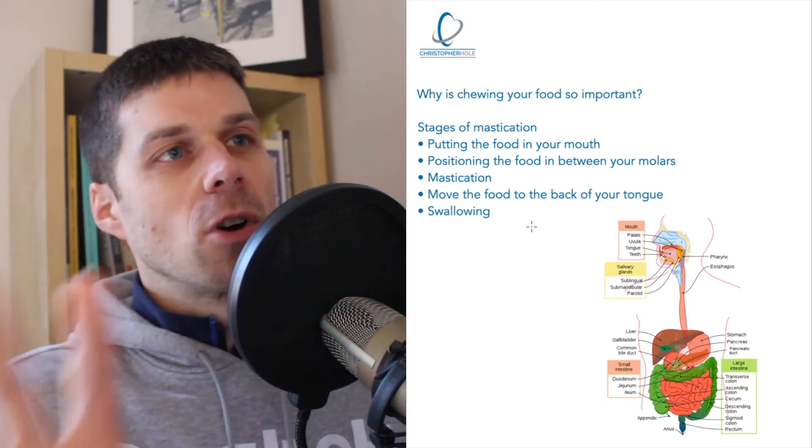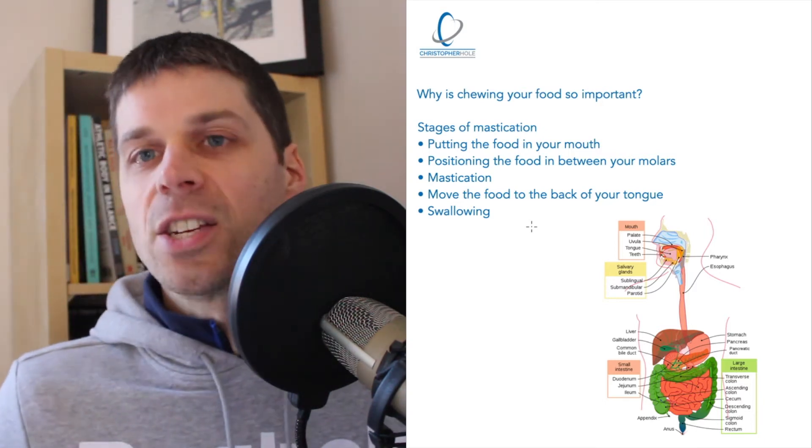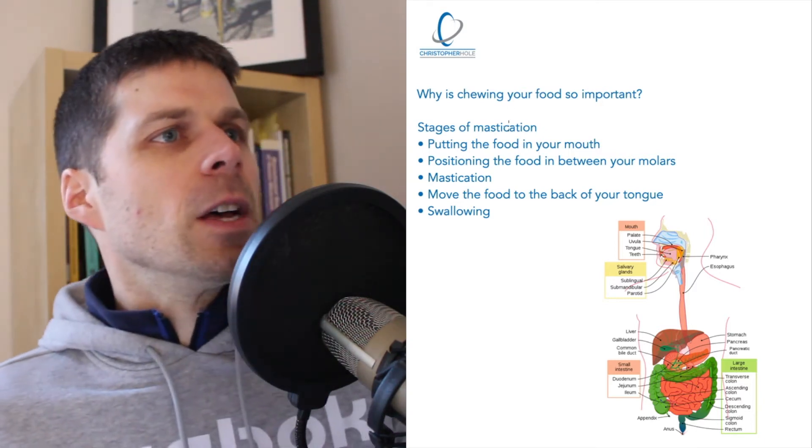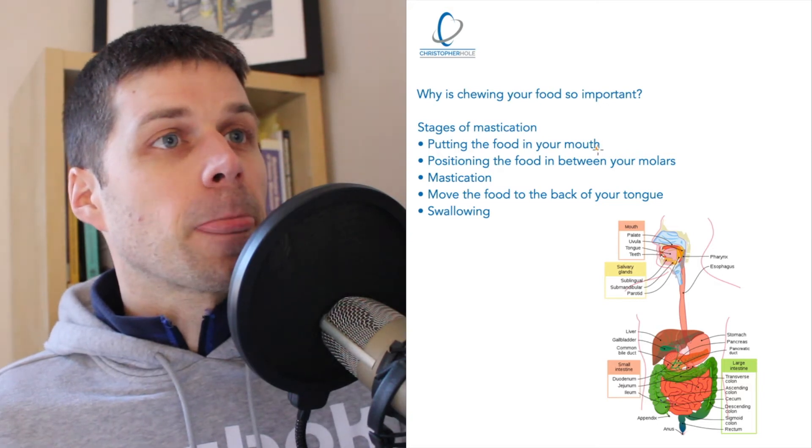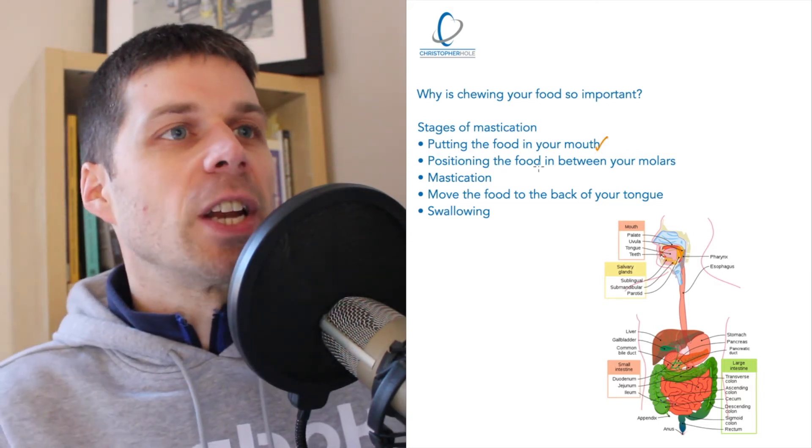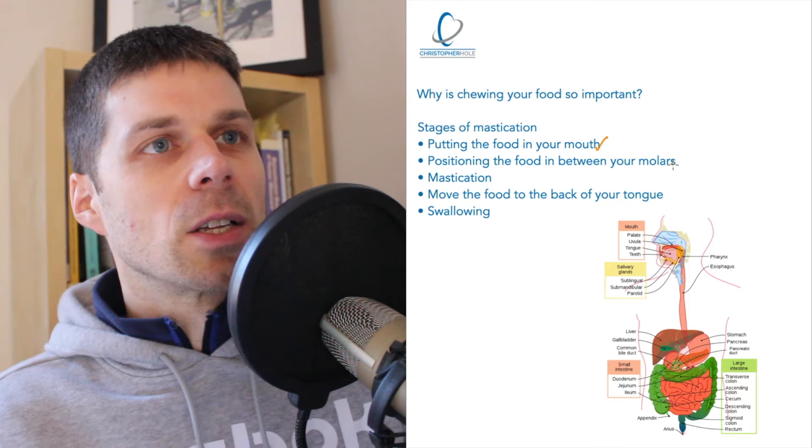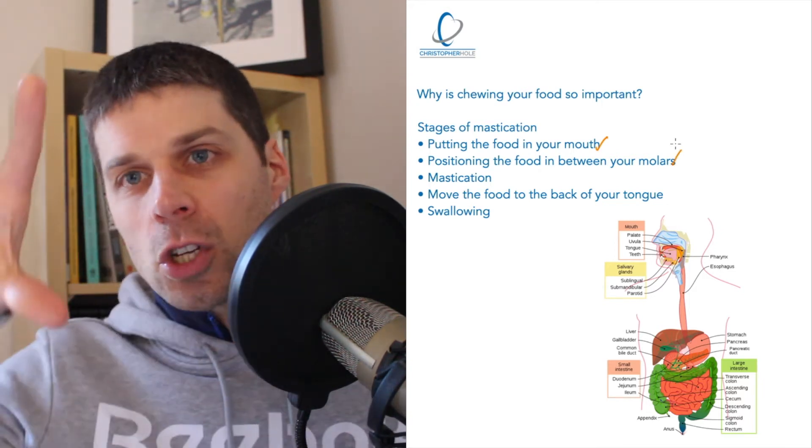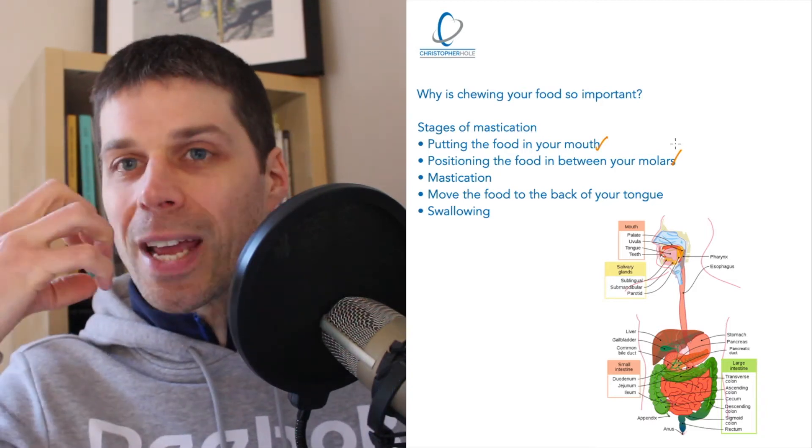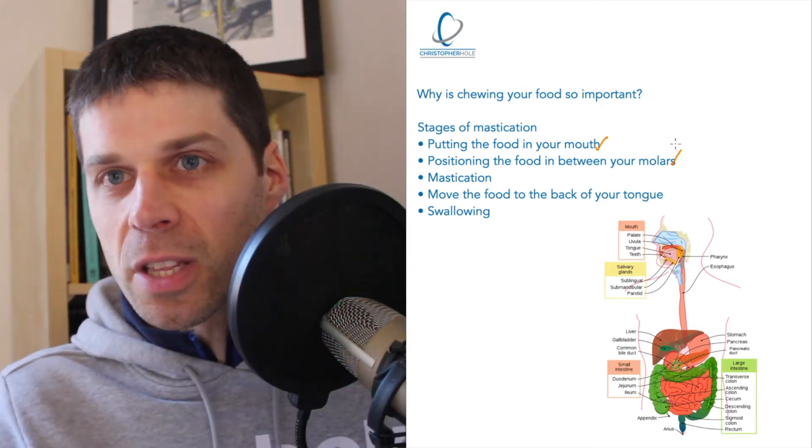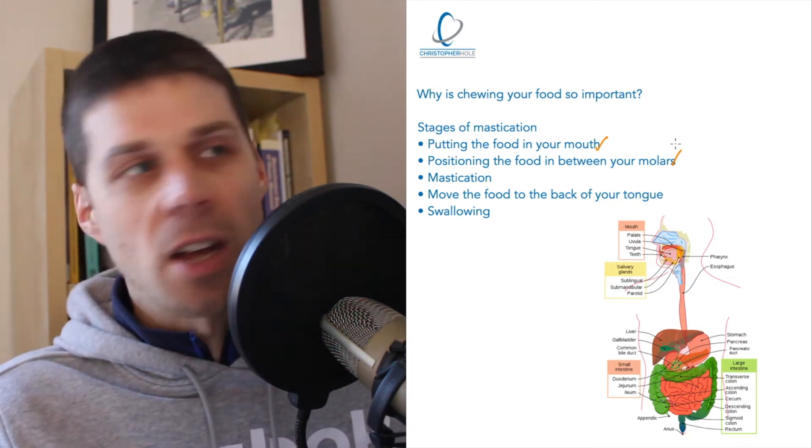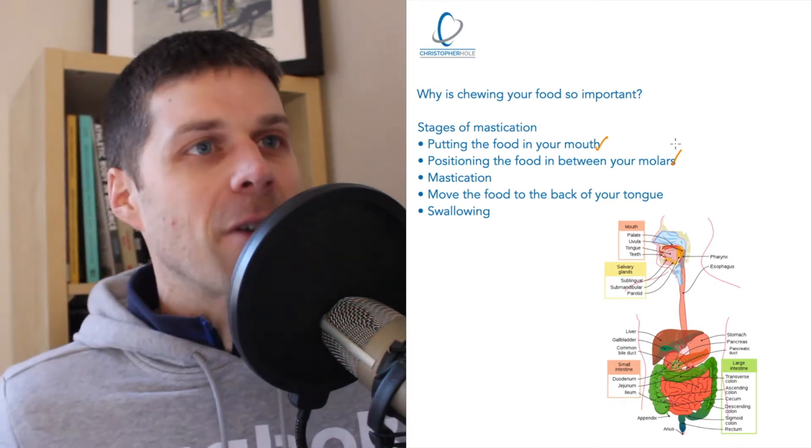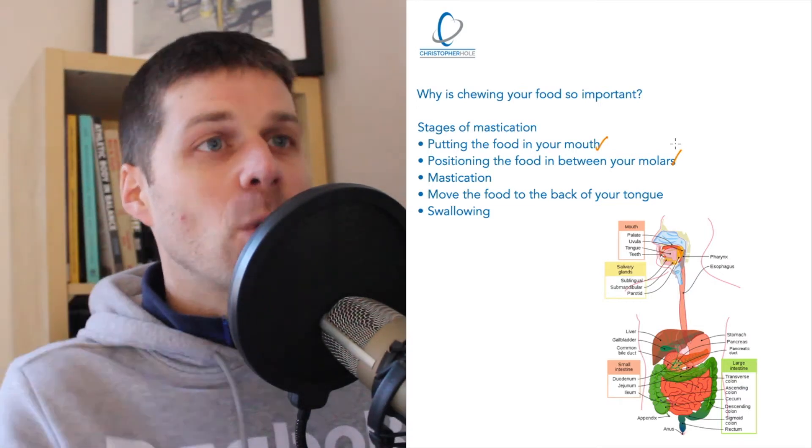To add to this, we've also got stages of mastication, so the stages of chewing your food. Obviously, the first stage is putting the food in your mouth, and then positioning it between your molars. We may use these front teeth to sort of chop the food up, slice the food up, so we can put it into our mouth. That's essentially putting the food in your mouth, unless it's obviously bite-sized. Then we can just put it straight in the mouth, position it between the molars.